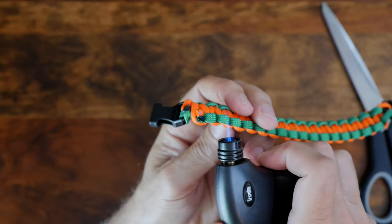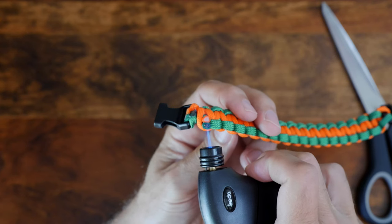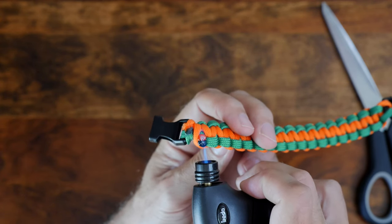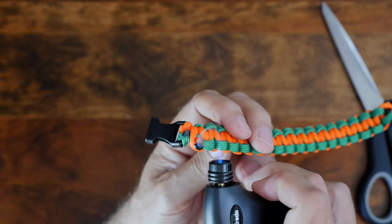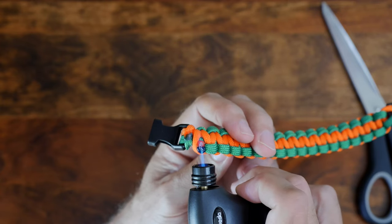With my ends cut, I'll now use my lighter to melt the ends carefully. When I have a good melt on both ends, I use my scissors to squish the ends flat against the back and also together as shown.